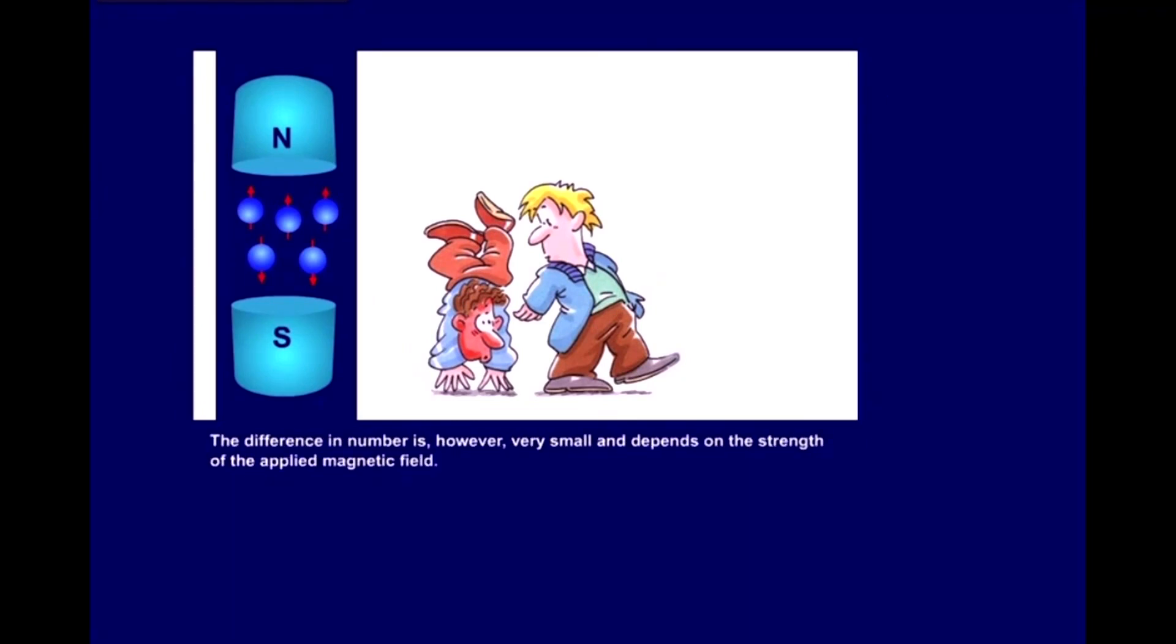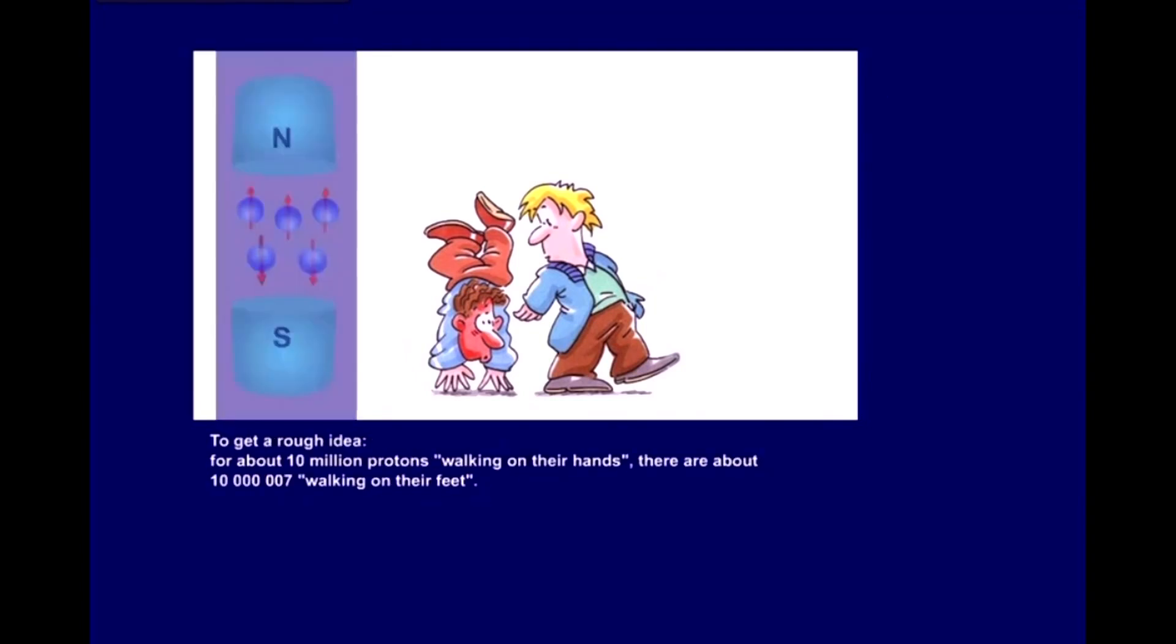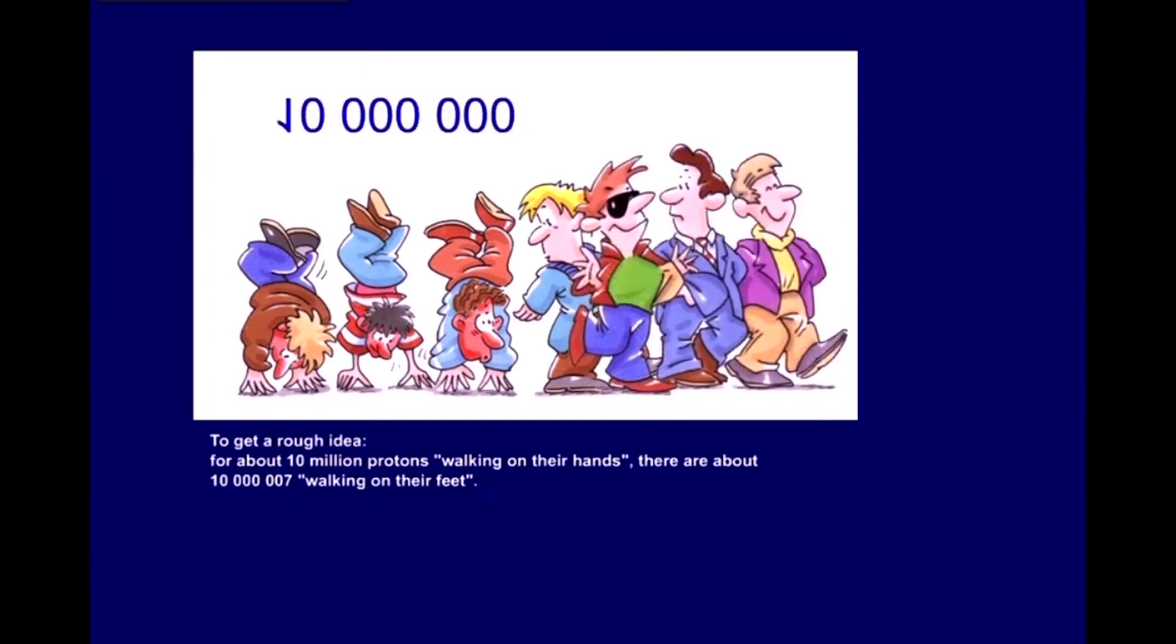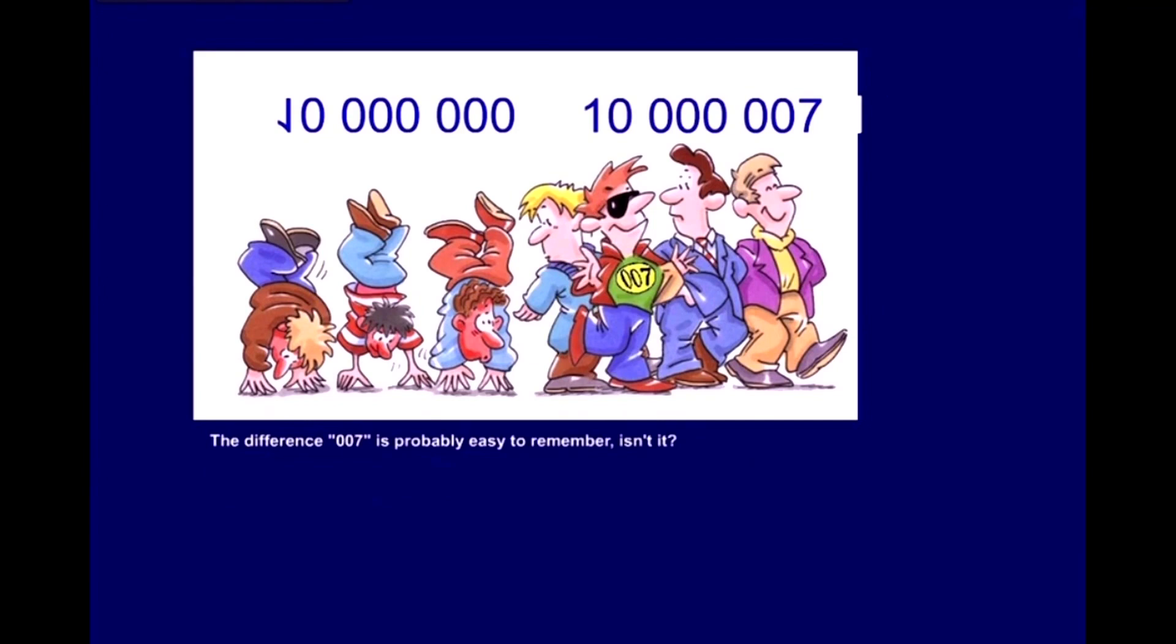The difference in number is, however, very small, and depends on the strength of the applied magnetic field. To get a rough idea, for about 10 million protons walking on their hands, there are about 10 million and seven walking on their feet. The difference 007 is probably easy to remember, isn't it?